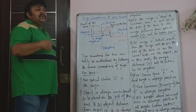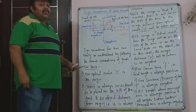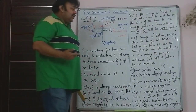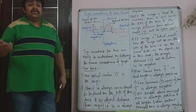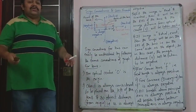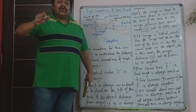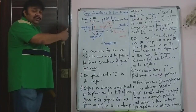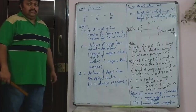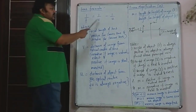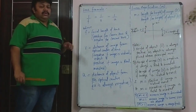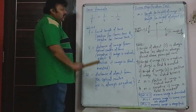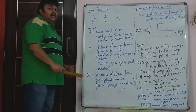Sign conventions can be asked in board exams as a 3-mark question. If the question says focal length of a concave lens is 20 cm, you must take it as minus 20 cm. The lens formula is: 1/f = 1/v − 1/u. This is the formula used in 10th standard for all lens-related sums. F stands for focal length — positive for convex lens, negative for concave lens.